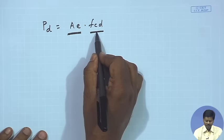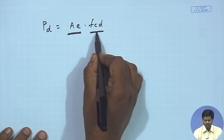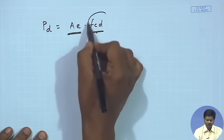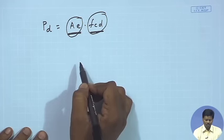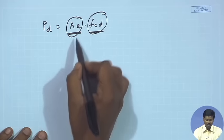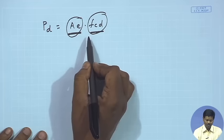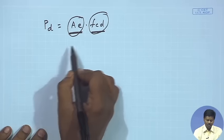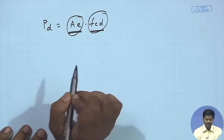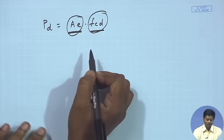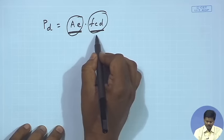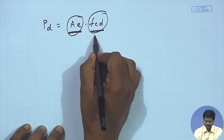Also, we do not know the allowable compressive stress of the member, because it depends on the slenderness ratio. The slenderness ratio depends on the radius of gyration, and the radius of gyration depends on the dimension of the section. So both parameters are unknown and both are dependent on each other. Therefore, there is no linear process to simply find out the dimension of the section. What we need to do is assume a certain compressive stress Fcd.